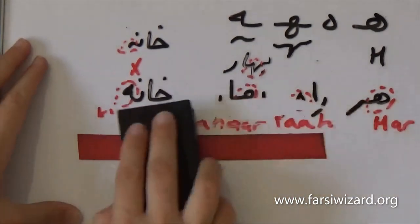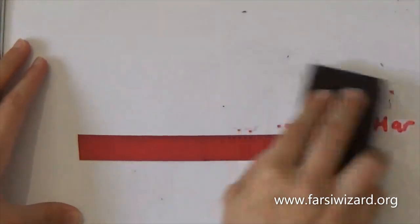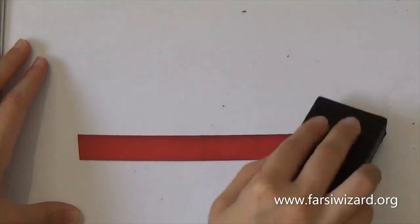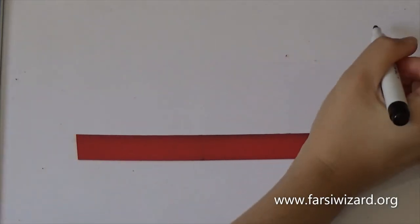Now let's have a look at the second letter that we are going to learn today. So the second letter for today is the letter ye, which, as I explained, is the equivalent of Y or I in English.